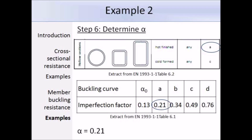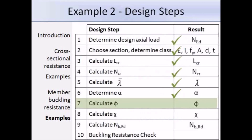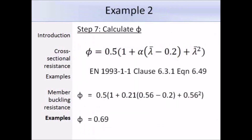Now that we have λ̄ and alpha, we can calculate phi. Substituting in our values using the expression, we get a value of φ = 0.69.